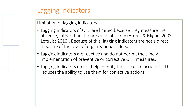Lagging indicators have limitations. They measure the absence rather than the presence of safety — a very important point — because these indicators only come into play when something has already gone wrong. They are therefore not a direct measure of organizational safety level. Additionally, lagging indicators are reactive and do not permit the timely implementation of preventive or corrective health and safety measures. They only indicate that safety levels were not as good as they should be, and corrective measures are put in place after someone is already harmed. Lagging indicators also don't help identify the causes of accidents, which reduces their usefulness for corrective actions.